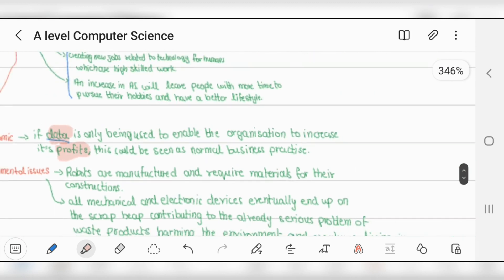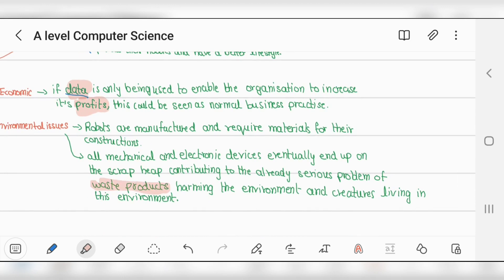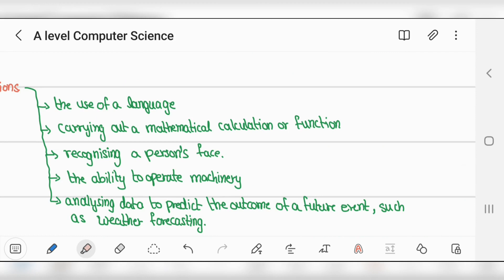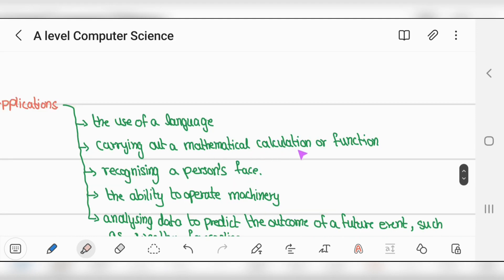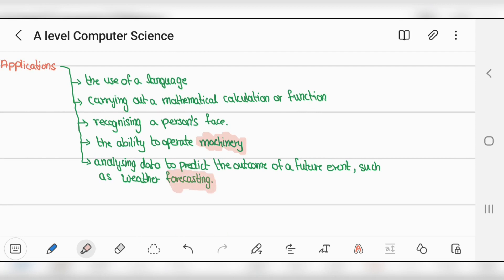Environmental issues: robots are manufactured requiring materials for construction. All mechanical and electronic devices eventually end up on scrap heaps, contributing to serious waste problems harming the environment and creatures. AI applications include language translation, carrying out mathematical calculations, face recognition, operating machinery, and analyzing data to predict future events like weather forecasting. AI is very cool - I encourage you all to start working on it.